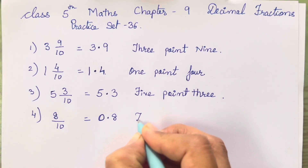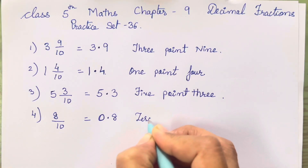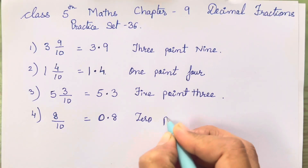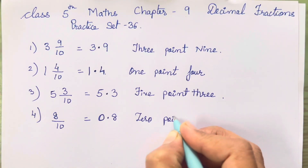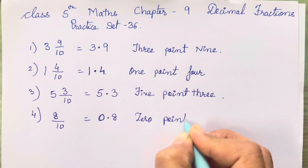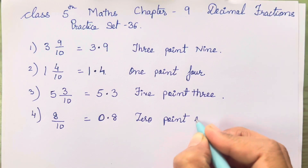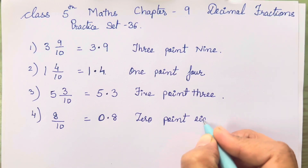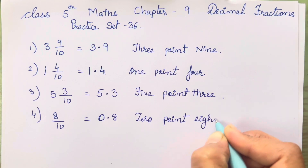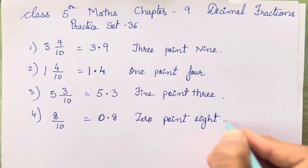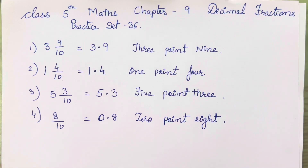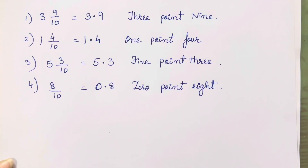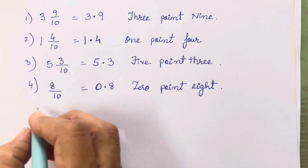So 0.8. Don't get confused with these kinds of sums — it is the same method, but you all have to be alert while writing it.